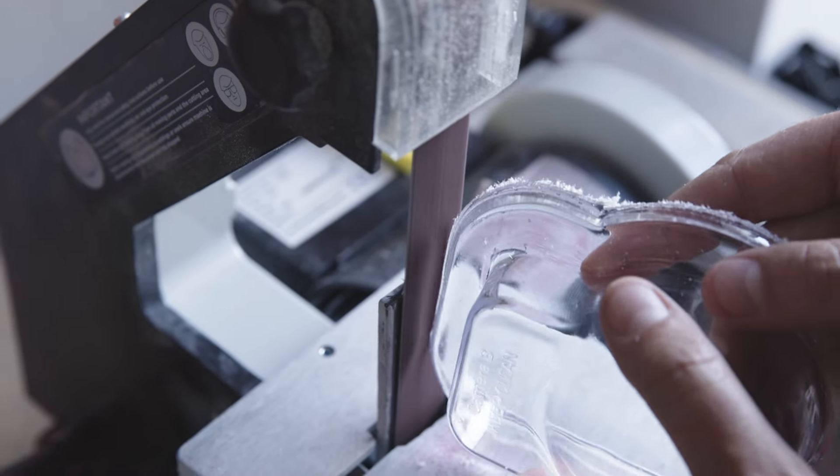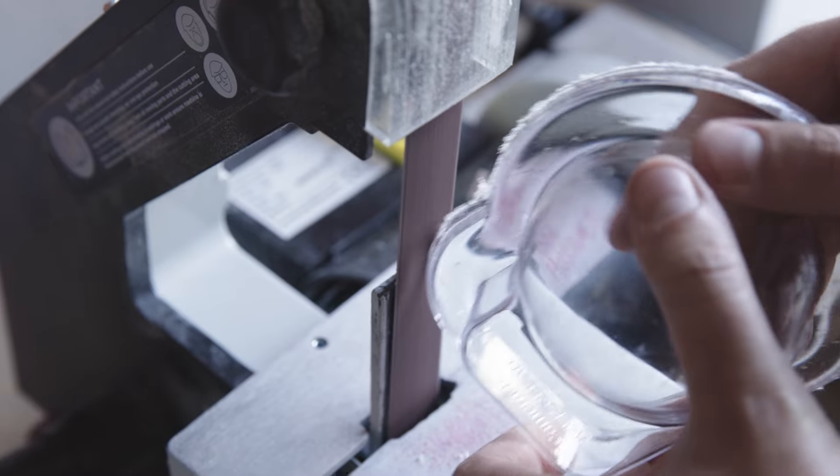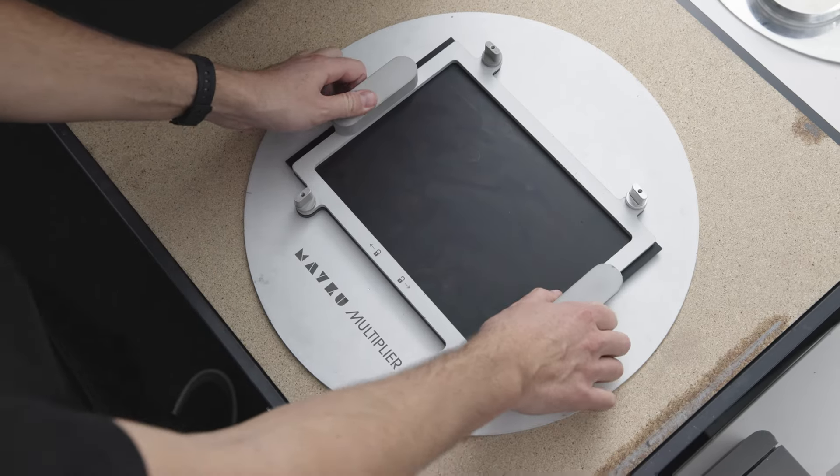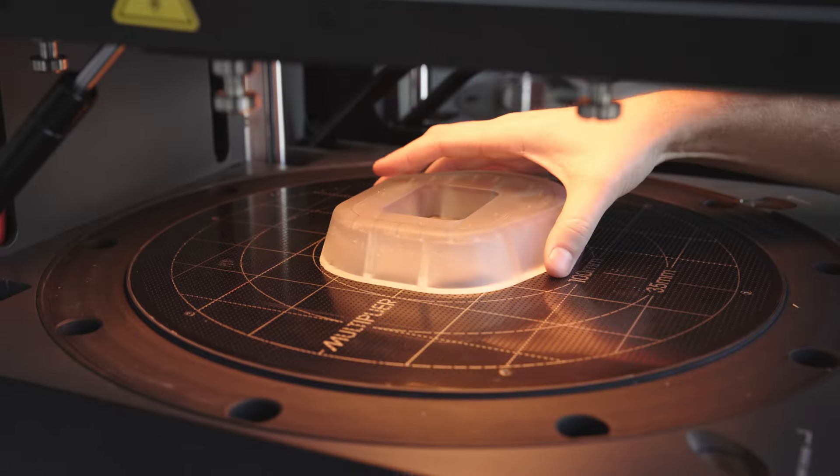We're just going to take the rough edges off this part using the belt sander. Now we're using a 3mm sheet of pure black hips.